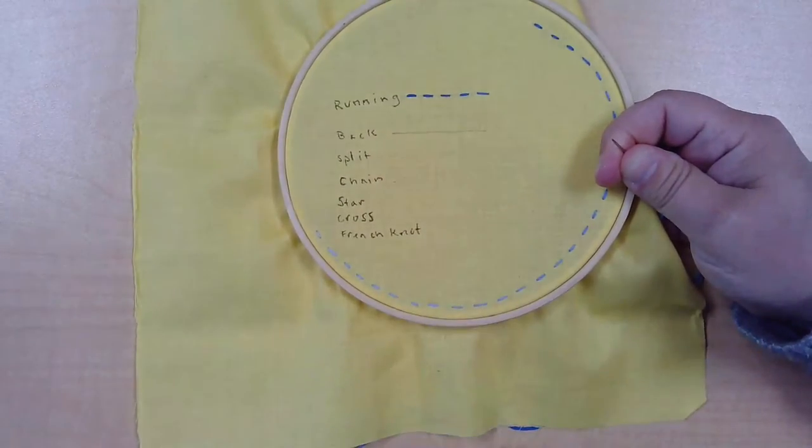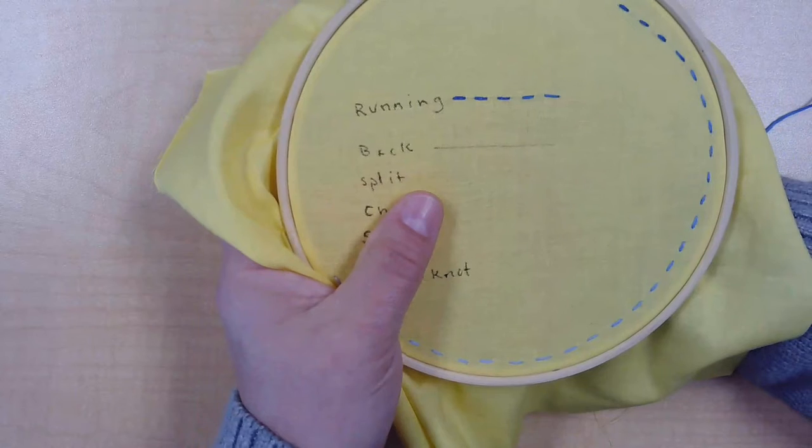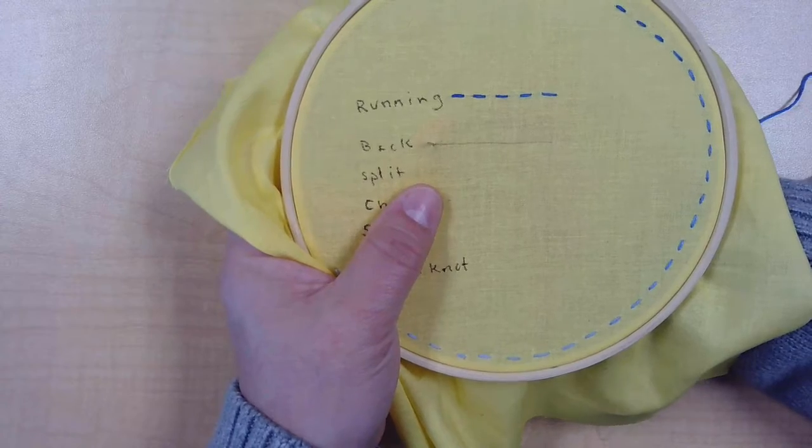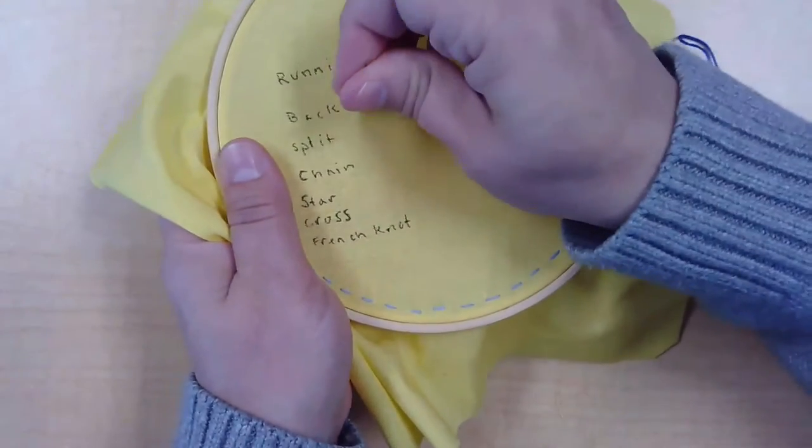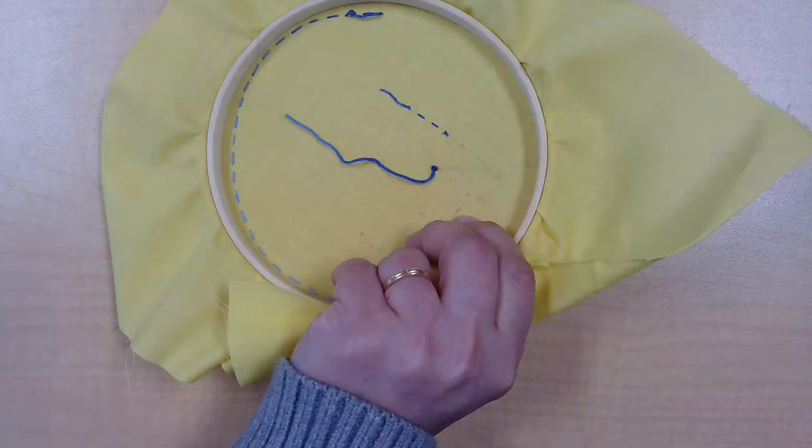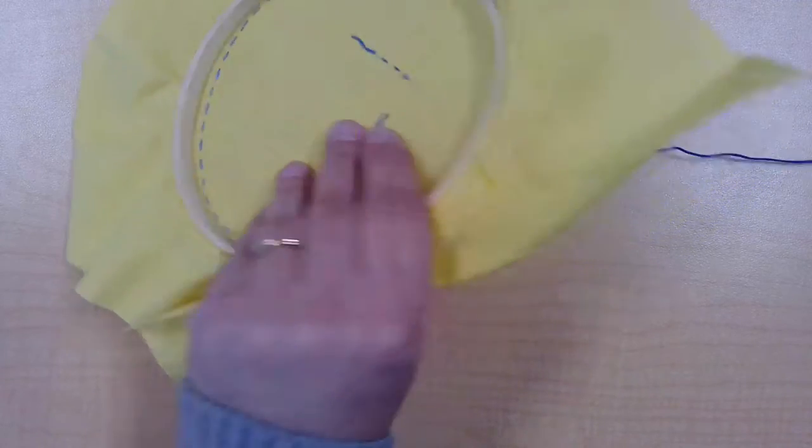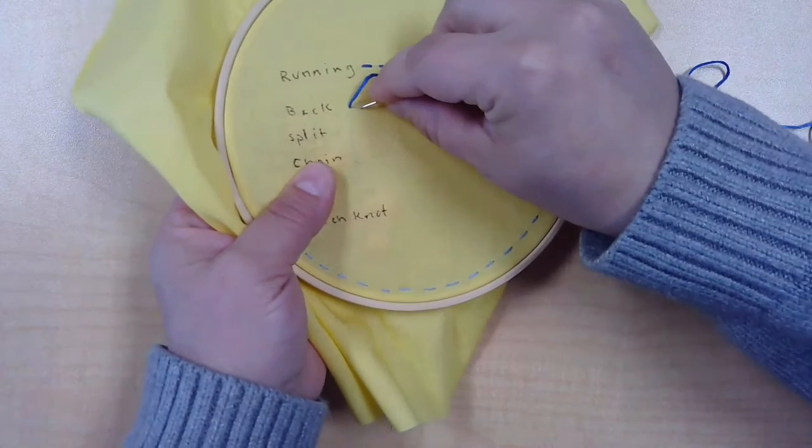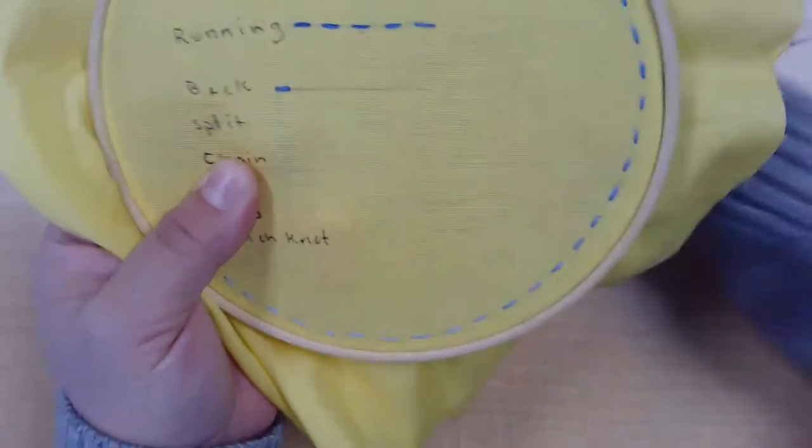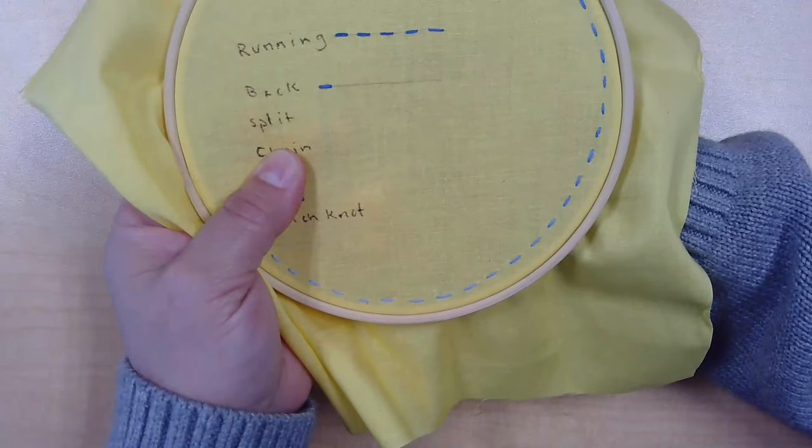Now the back stitch begins like the running stitch, in which you set your first stitch coming up from the back, making sure to leave a bit of a tail. Hold that in place. Nice consistent stitch length is the key to the back stitch. So you're going to set your first stitch, and then you're going to come up an equal amount of distance away from that stitch.